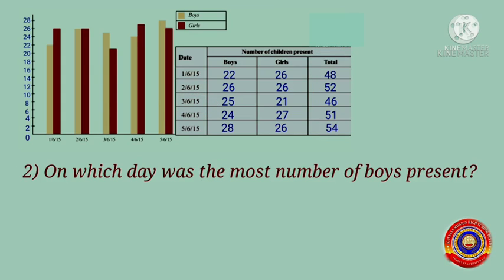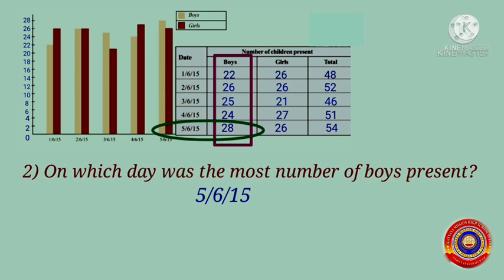Question 2: On which day was the most number of boys present? Look at the number of boys column — on which day was the most number of boys present? Yes, it was on 5th June 2015, and the number of boys present on that day is equal to 28.